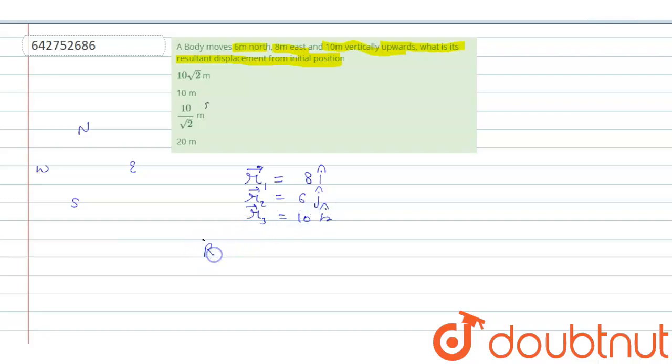Resultant displacement is 8 I cap plus 6 J cap plus 10 K cap. So, magnitude of resultant displacement is square root of 8 square plus 6 square plus 10 square. So, it becomes 64 plus 36 plus 100.